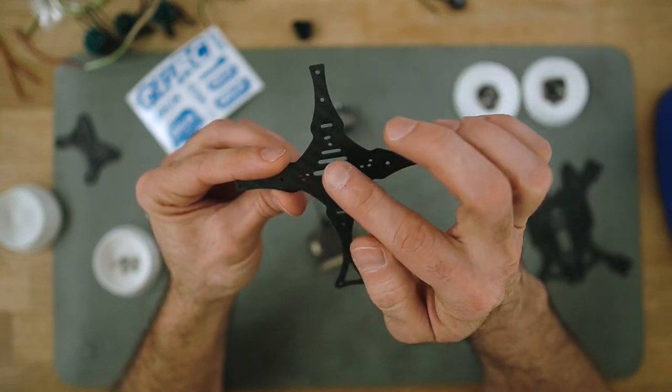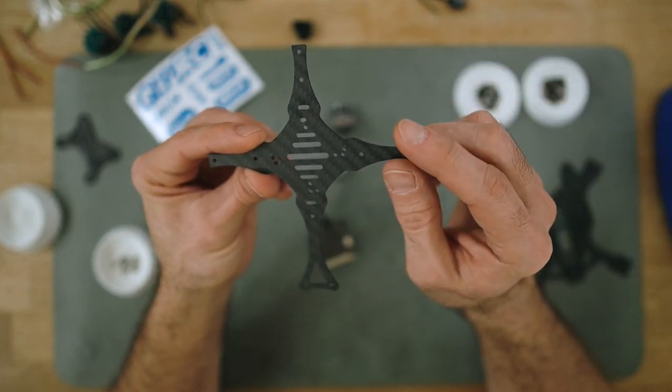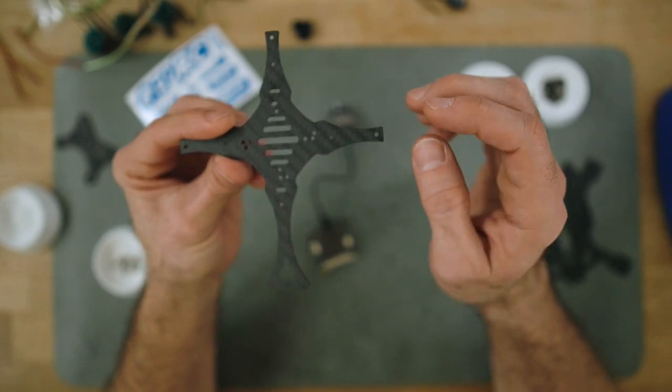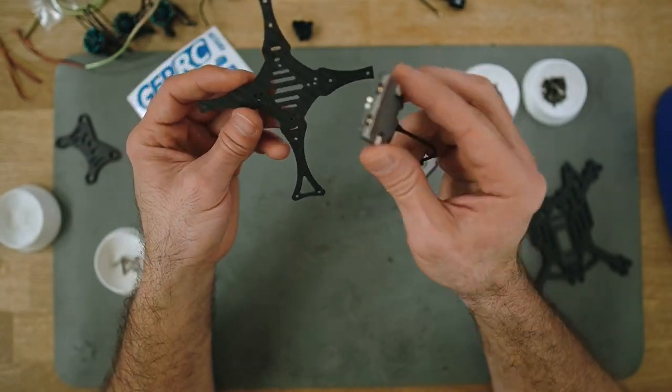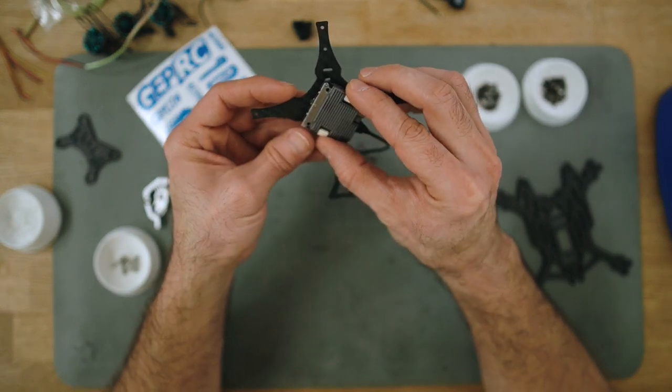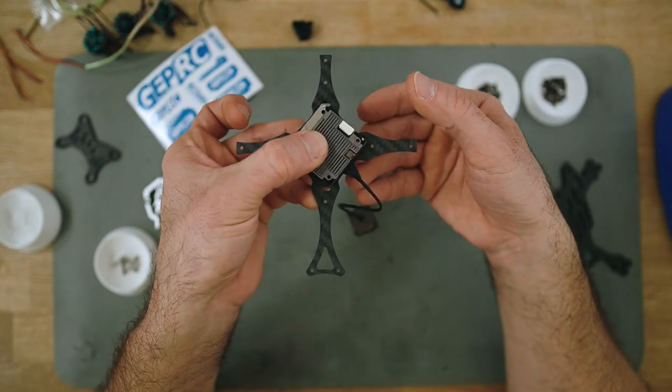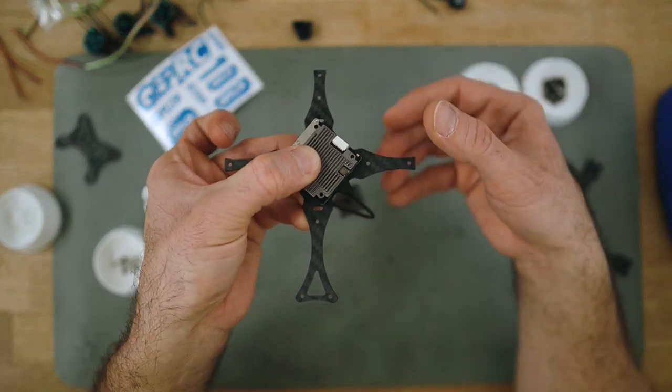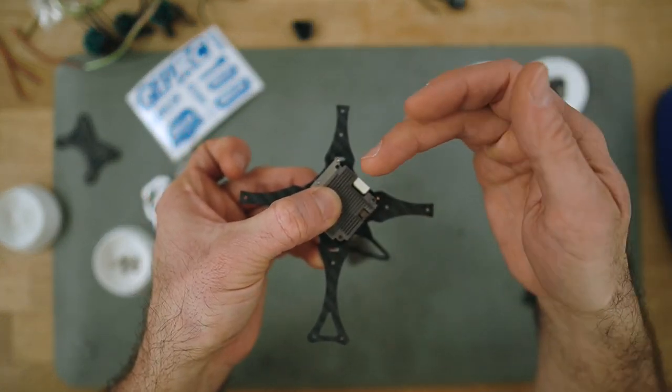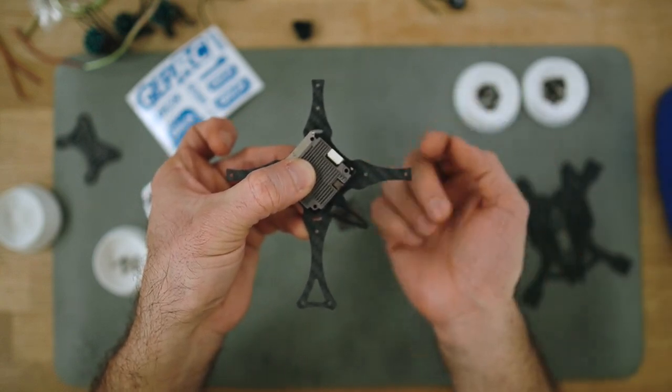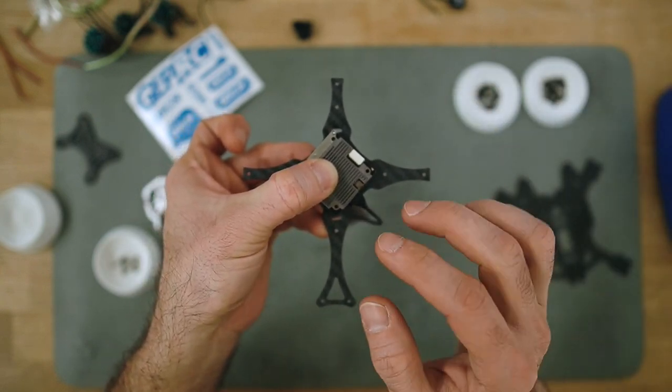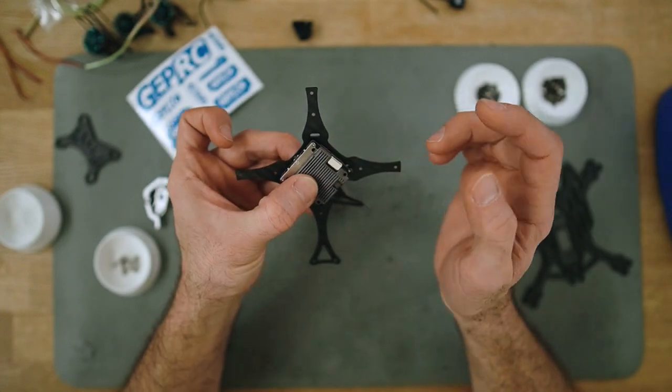The bottom plate has different holes depending on the VTX you're going to be mounting. In our case I'm using the Walksnail and it's going to fit like this in diagonal - they have a specific hole for this VTX here. Let me find some M2 screws and screw this to the bottom plate.